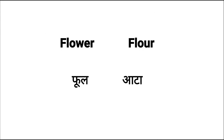Aur yaha peh ek aur hai — 'flower.' Dono ka pronunciation hai 'flower.' Yaha pe dhyan de: F-L-O-U-R. Kuch students isko galti se 'floor' padhate hai, but it is not 'floor,' it is 'flower.' It is pronounced as 'flower,' yani ata. Dono ka pronunciation 'flower' hai.